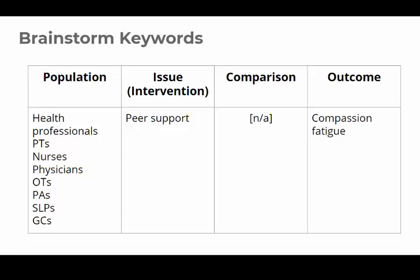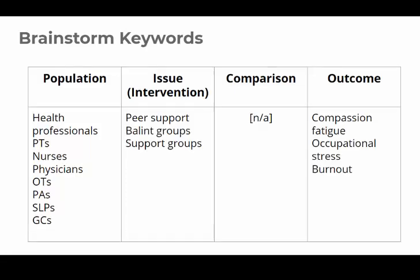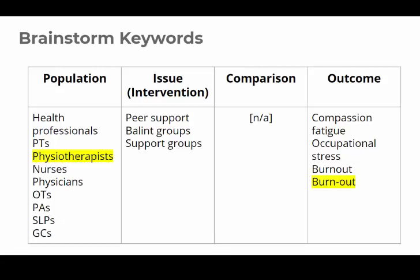Now we need to do that same brainstorming for the other terms as well. One of the things I like about this process is that it can help you think about what fits and what doesn't. For example, are compassion fatigue and burnout similar enough for our topic? Is occupational stress too broad? Often you won't know the answers until you run some searches. You may also not know all the alternative terminology until you run some searches — I'll talk more about that in the Refining Your Search video. One last note: remember to include international variations as well as variations in spelling or format, because even small variations need to be considered.